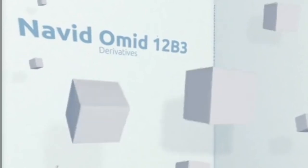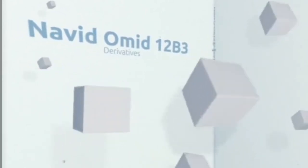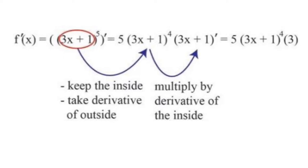Example, find the derivative of f(x) equals parentheses 3x plus 1 to the power of 5. And now, let's go to the solution. In this example, there is a function, 3x plus 1, that is being taken to the fifth power.